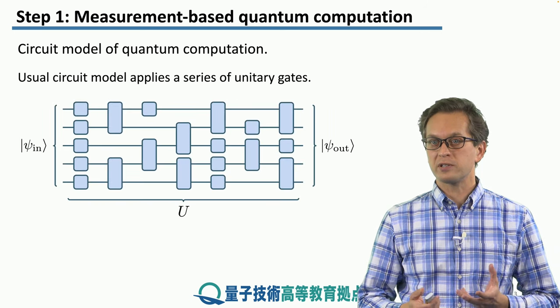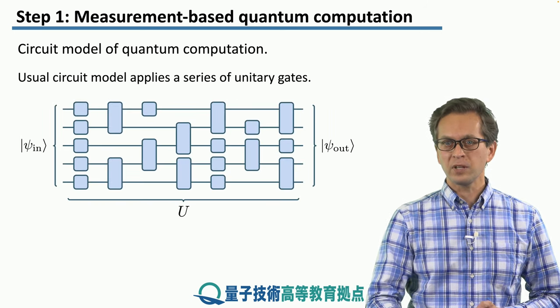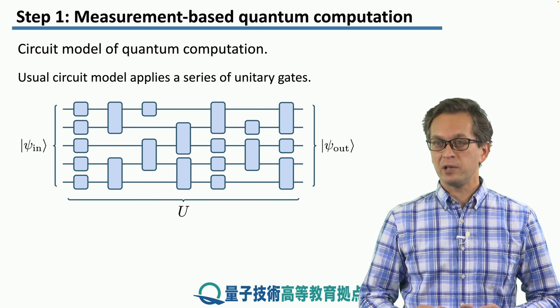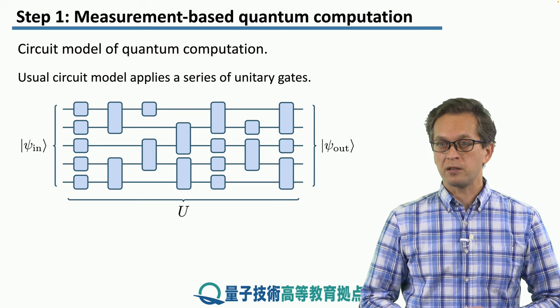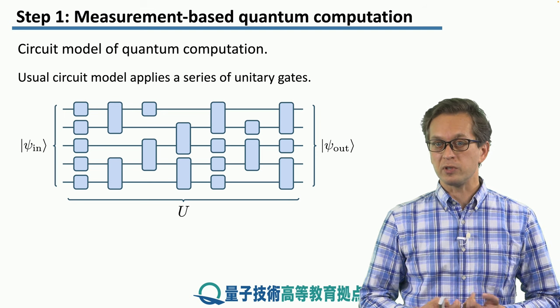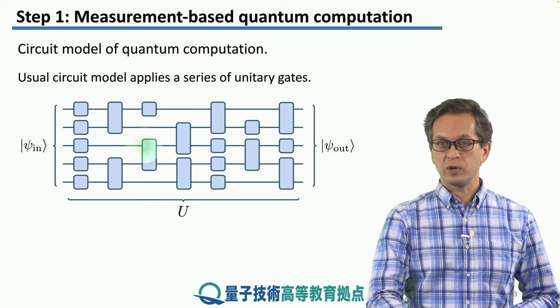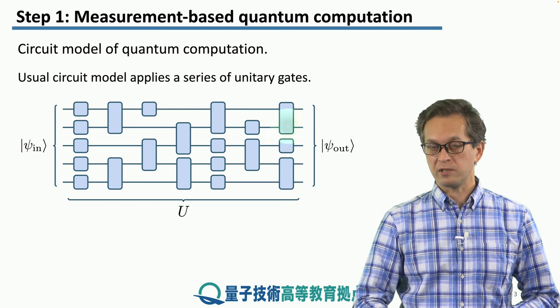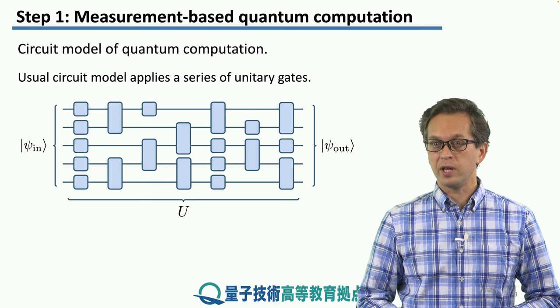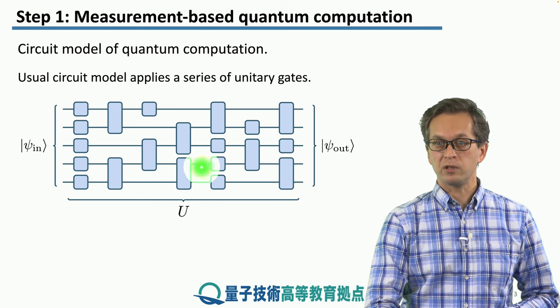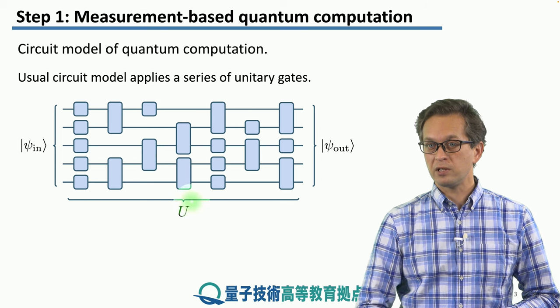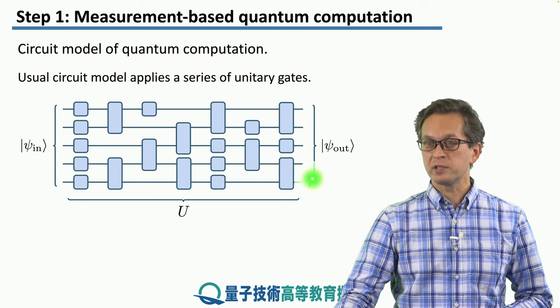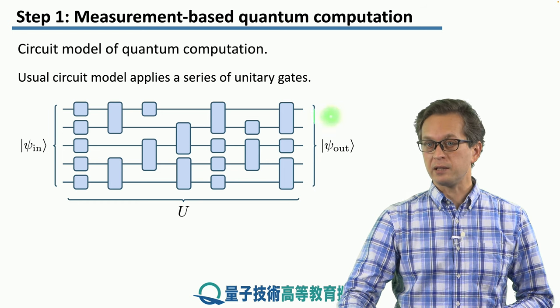Usually, the circuit model works in the following way. We have some input state given here by the ket psi in, and then we manipulate this state by a set of unitary operations. They could be single qubit, they could be multi qubit, and some of them we can apply in parallel, for example here, or we have to do them in series. In this way, when we compose them all together, we apply some unitary U, and it's this unitary that characterizes the quantum computation. And at the end, our qubits are left in some output state given by the ket psi out.